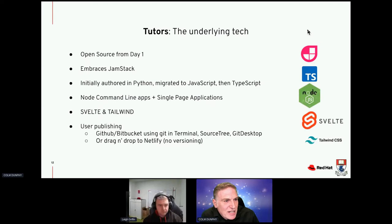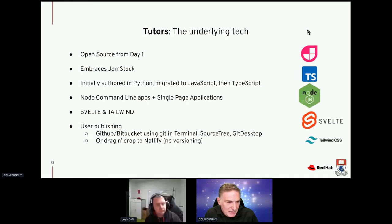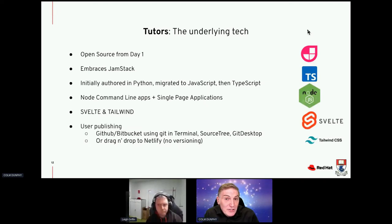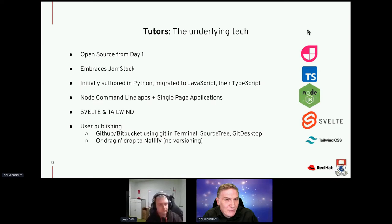Let's talk about the underlying technology. It's open source from day one — it embraces the Jamstack, initially authored in Python, migrated to JavaScript, and then TypeScript. There are Node command-line apps generating single-page applications, and currently it's a Svelte application with Tailwind, implemented in TypeScript. Users originally published to GitHub or Bitbucket, which required knowing Git — originally via the terminal, then using applications like Sourcetree and GitHub Desktop.